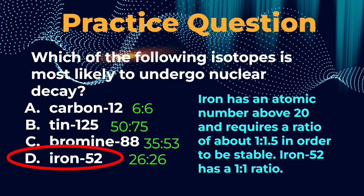And once we have that figured out, we can look at the actual numbers. So if we look at letter A, carbon-12, you can see that in green I've explained that it has 6 protons and 6 neutrons. That's a 1 to 1 ratio. And because carbon is a smaller atom with an atomic number that's below 20, this is going to lead to stability. So I'm not going to pick A.